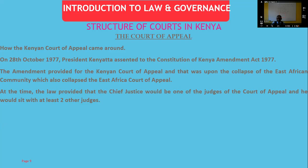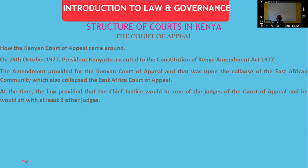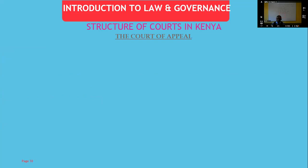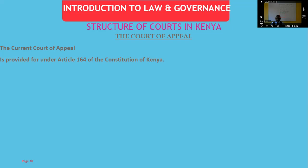At that time, the law provided that the Chief Justice would be one of the judges of the Court of Appeal, sitting alongside two other judges. The current Court of Appeal is provided for under Article 164 of the Constitution of Kenya — the Supreme Court being under Article 163, and the High Court under Article 165. Article 164 prescribes a minimum of 12 judges as may be prescribed by an Act of Parliament.